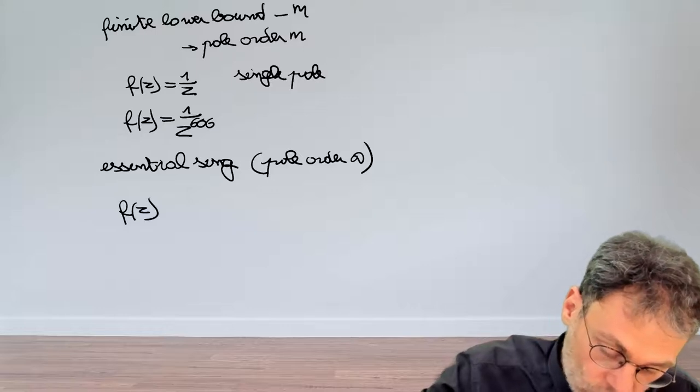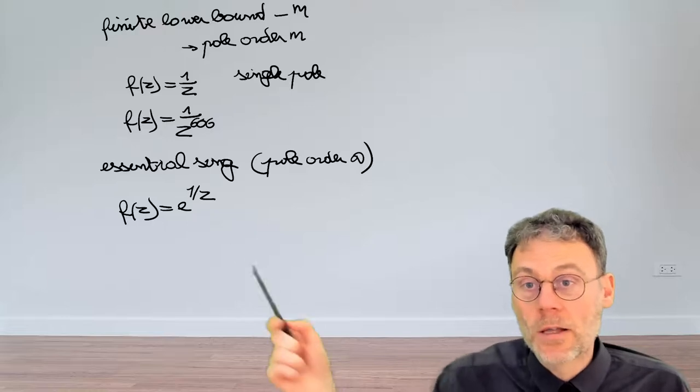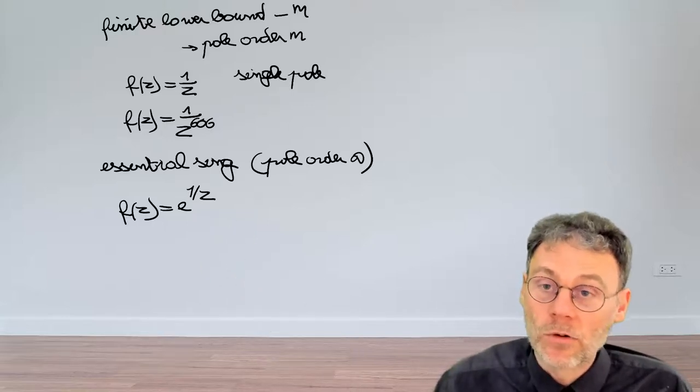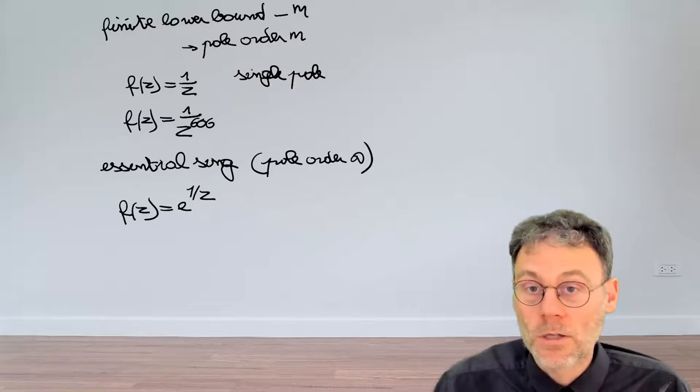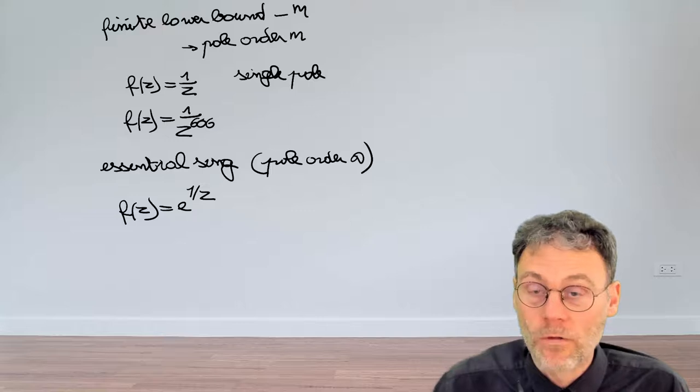So in order to convince yourself that they do exist, have a look at the function f(z) = exponential 1 over z. Pause the video and develop that function in the Laurent series around the origin, and then indeed verify that the Laurent series has an infinite number of negative powers of z.